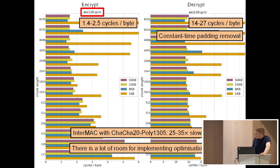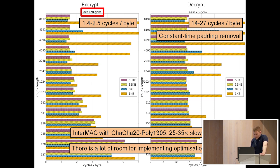These measurements are done on a machine that supports AES intrinsics, which is why ChaCha is quite a lot slower. We didn't think much about speed optimization, so there is still a lot of room for improving these measurements.